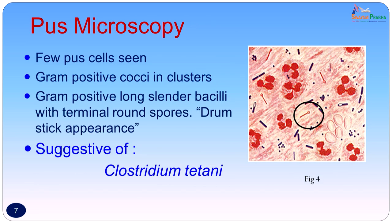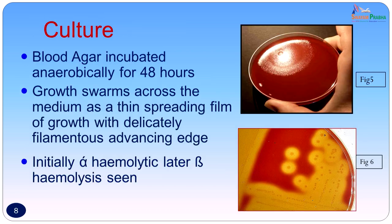On Gram stain, a few pus cells were seen. An occasional Gram-positive coccus in clusters was seen. Gram-positive long slender bacilli with terminal round spores were seen, giving a drumstick appearance. The morphology was suggestive of Clostridium tetani.